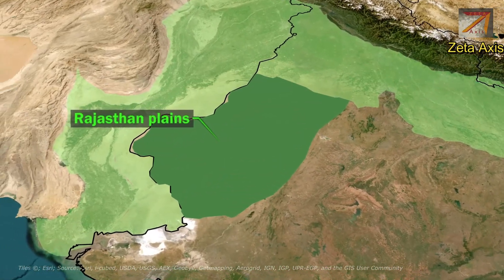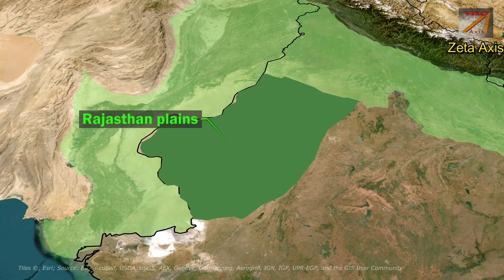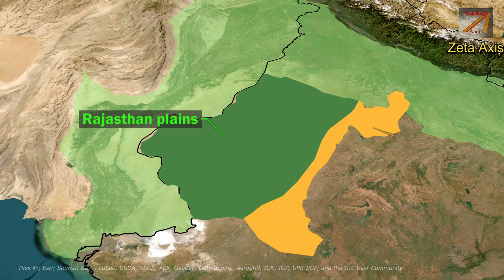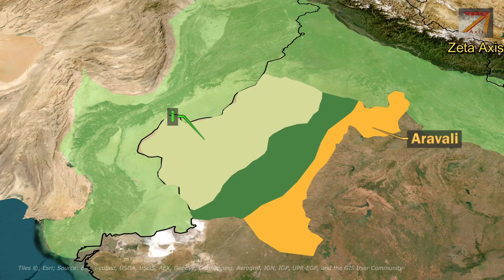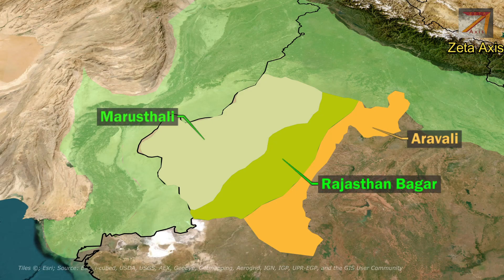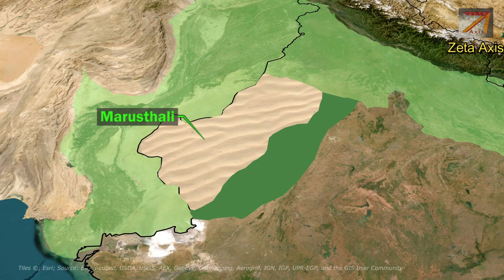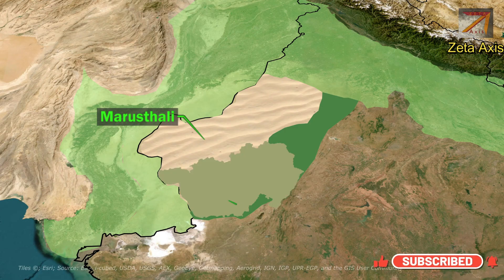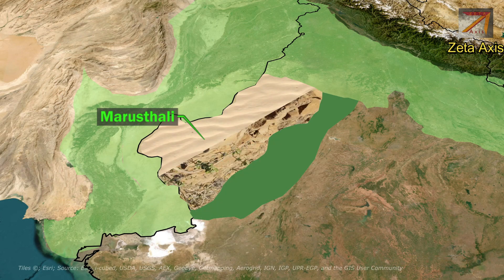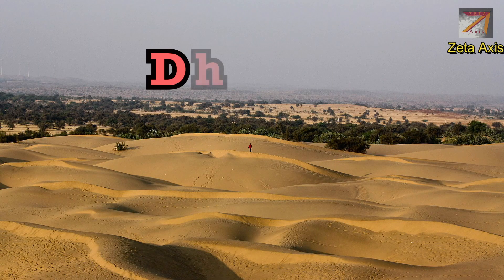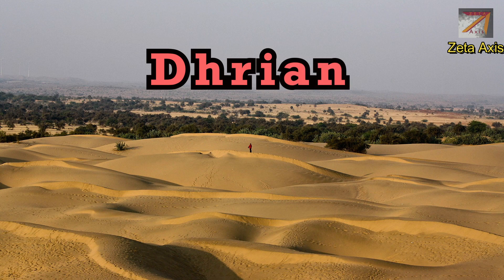The western part of the Indo-Gangetic Plains in India is called the Rajasthan Plains, located on the western side of the Aravalli mountains. The Rajasthan Plains can be divided into two parts: Marustali and the Rajasthan Bhadar region. Marustali is the western part — a full-fledged Thar Desert with vast stretches of sand dunes, also covering the Marwar Plains. The eastern part of Marustali is partially rocky while the western part is completely covered with sand. These shifting, moving sand dunes are locally known as Dhrian.